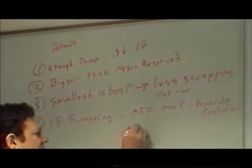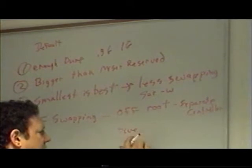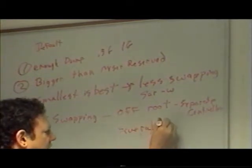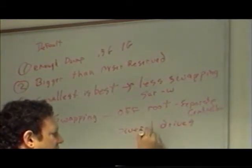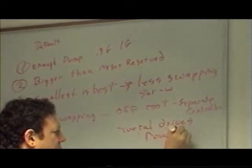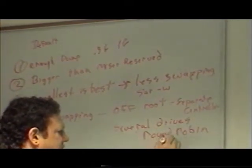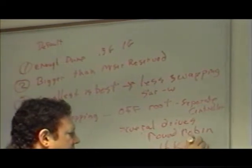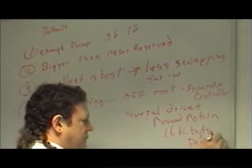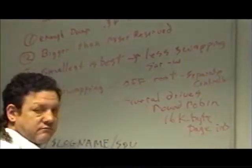You're better off spreading swap across several drives — the pages go round-robin. These are small pages; no matter what you do, they're 16K-byte page-ins. On swapping, I don't care about the page-outs; it's the paging in that matters. I could zero out an array, never use it, let it swap out — it's going to have to bring something back in. That was all visible with SAR -W, telling me how much activity I've got.